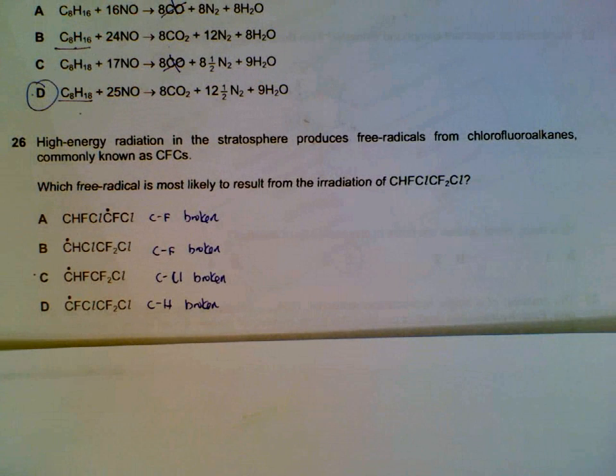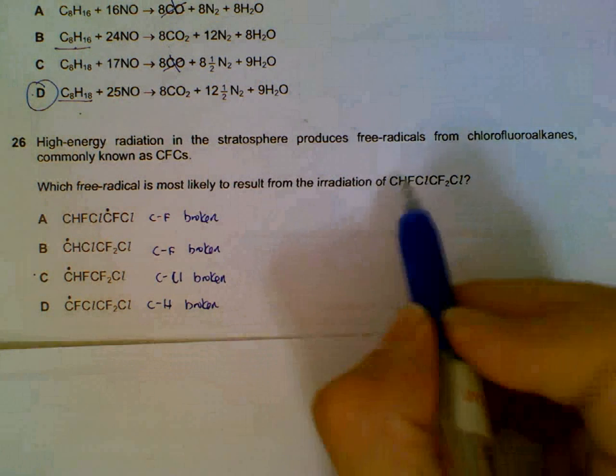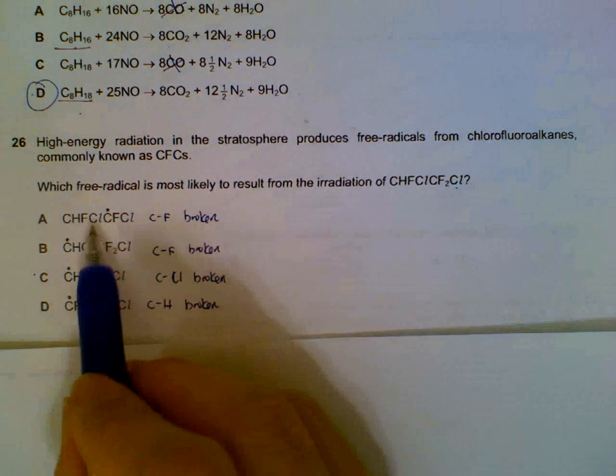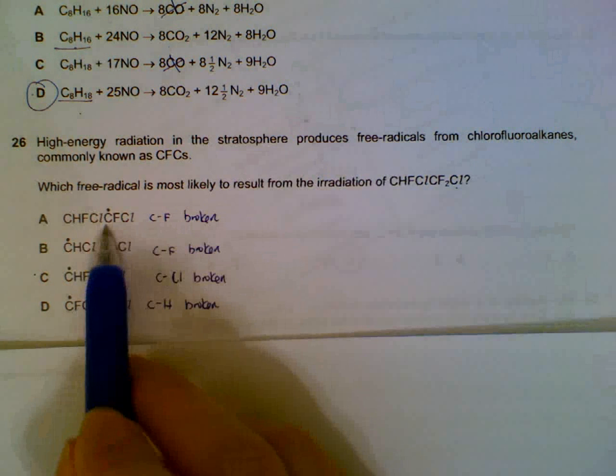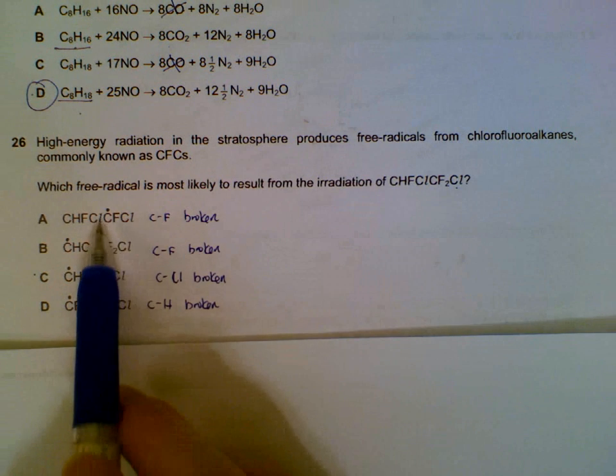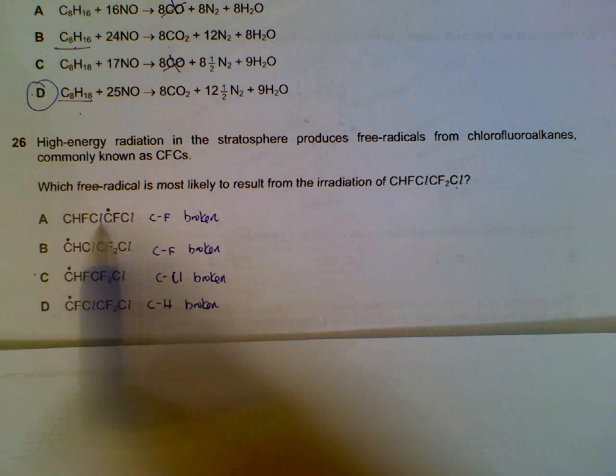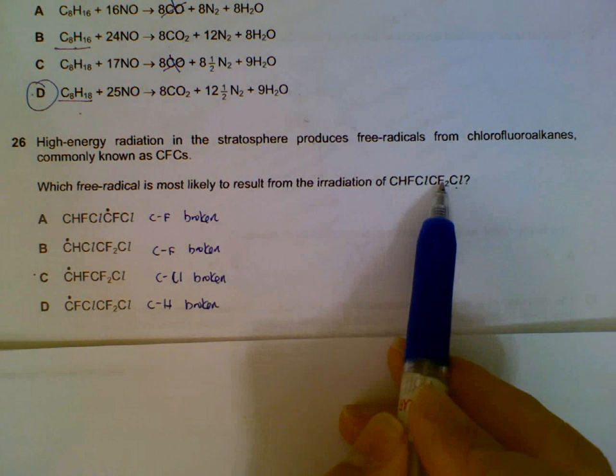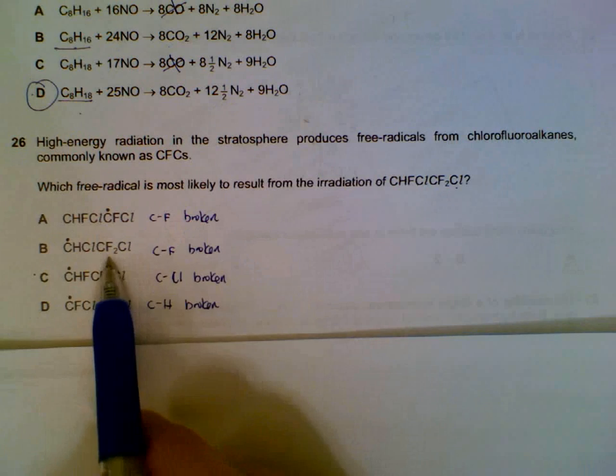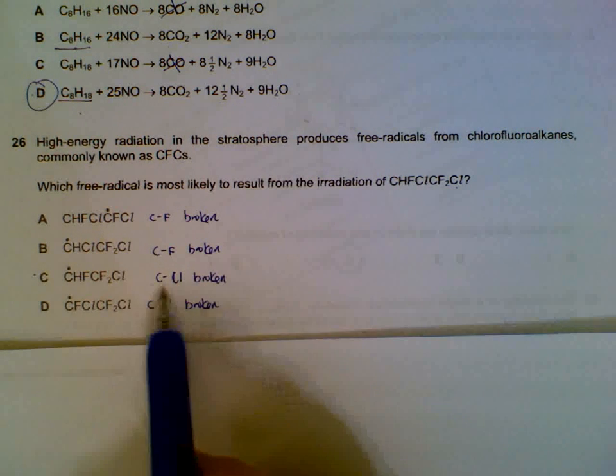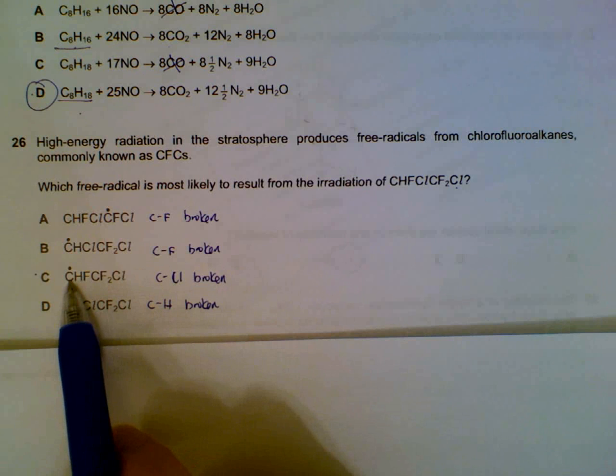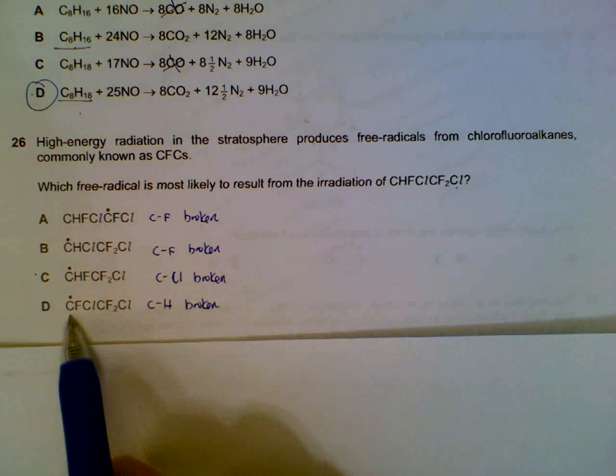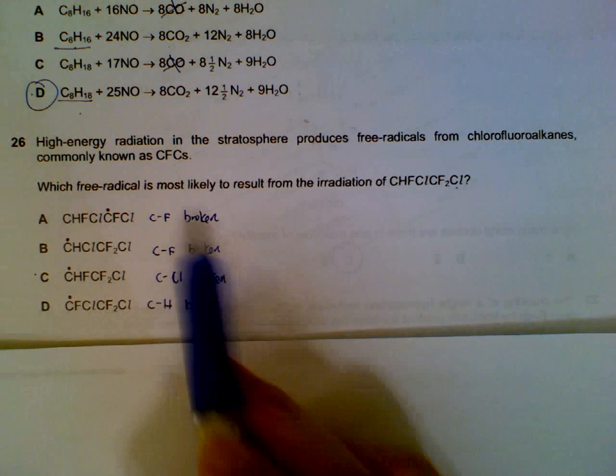Which free radical is most likely to result from here? What we need to compare is what bond is actually broken to get us into the options A, B, C, D. For the first option, we will be removing a fluorine. Second one, we will be removing the fluorine. Third one, we will be removing the chlorine. The fourth one, we are removing hydrogen.